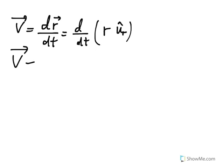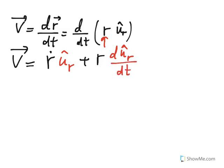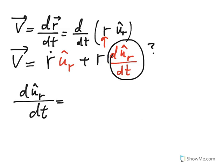Using the product rule, we take the derivative of the first term. The derivative of R using dot notation is R-dot, meaning dR/dt. So we have R-dot times U sub R, plus the first term R times the derivative of the unit vector U sub R. The question now is: what is this derivative of the unit vector U sub R?